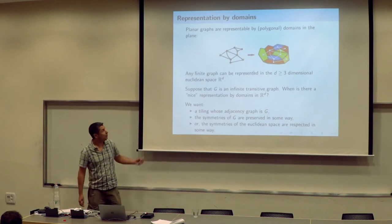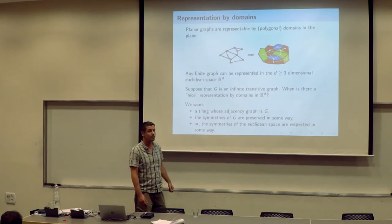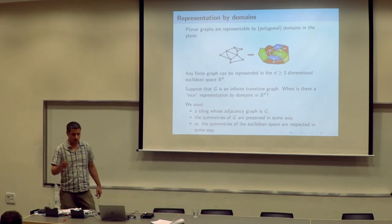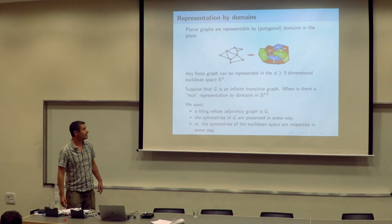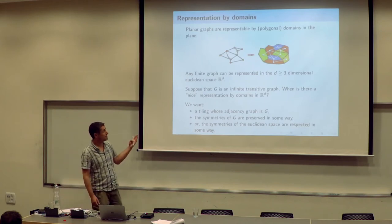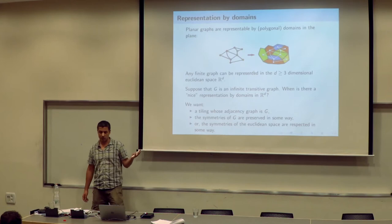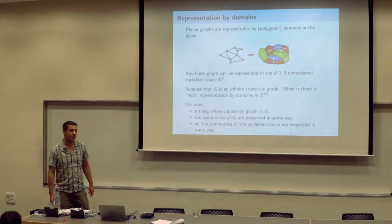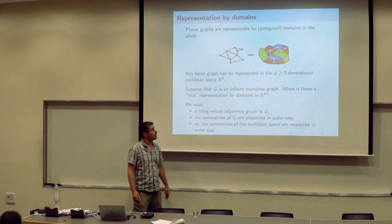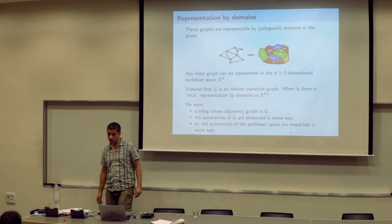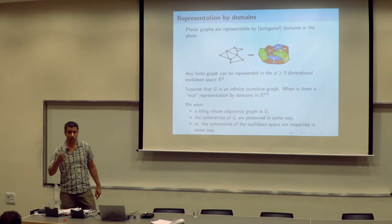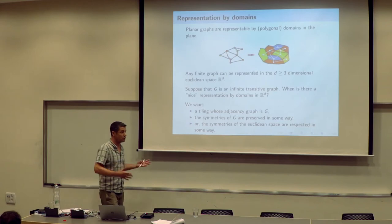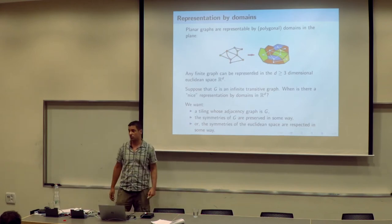We all know that finite planar graphs can be represented in the plane by polygons. This generalizes to any graph if we step one dimension higher: any finite graph can be represented in at least three dimensions by polyhedra. For every vertex there stands a polyhedron, and two of them share a face if and only if the two vertices are adjacent.